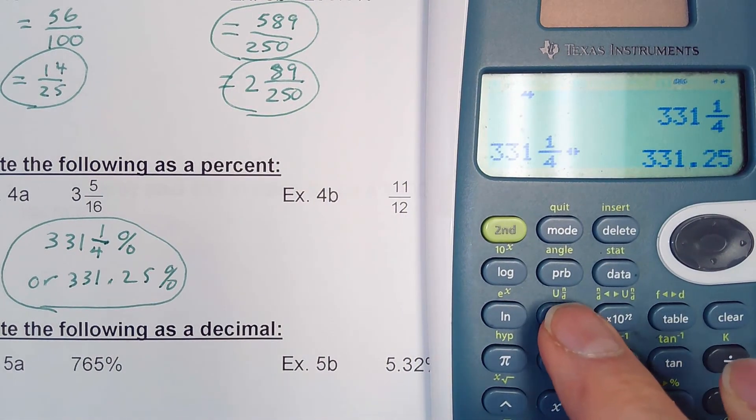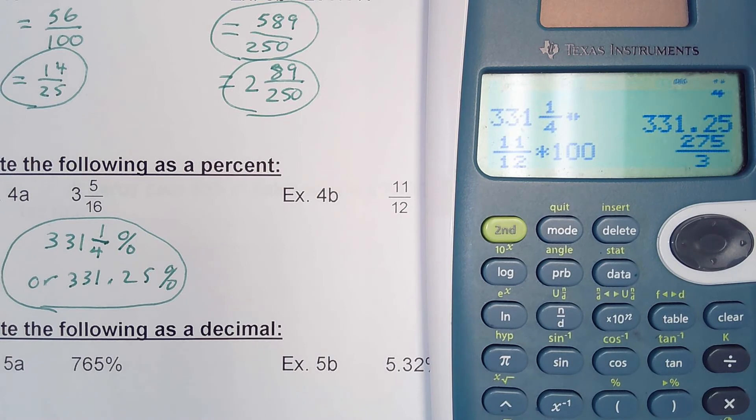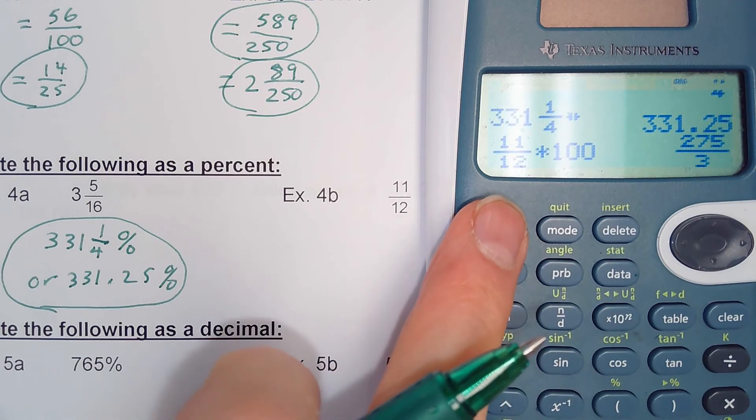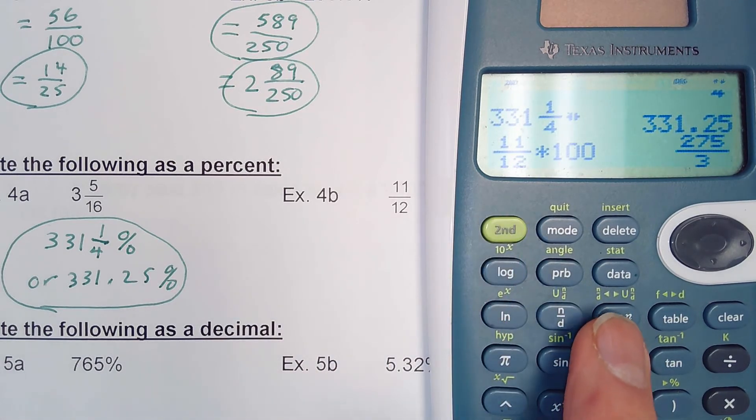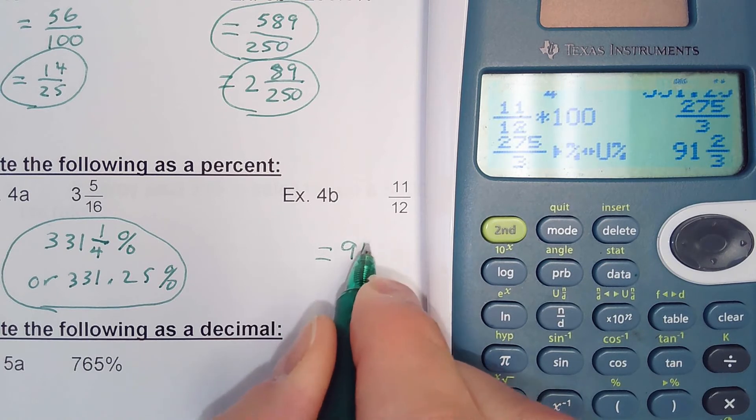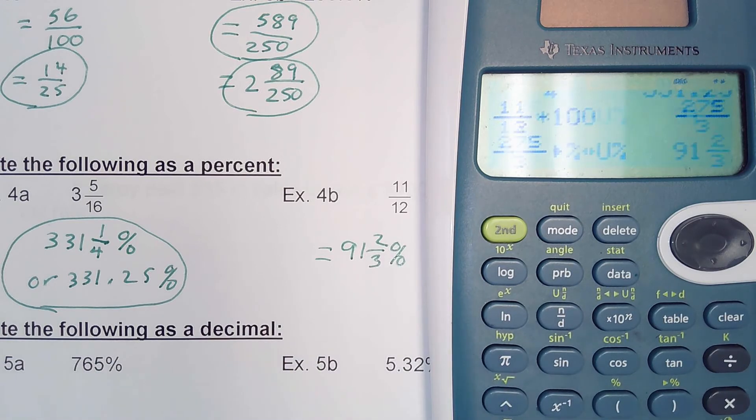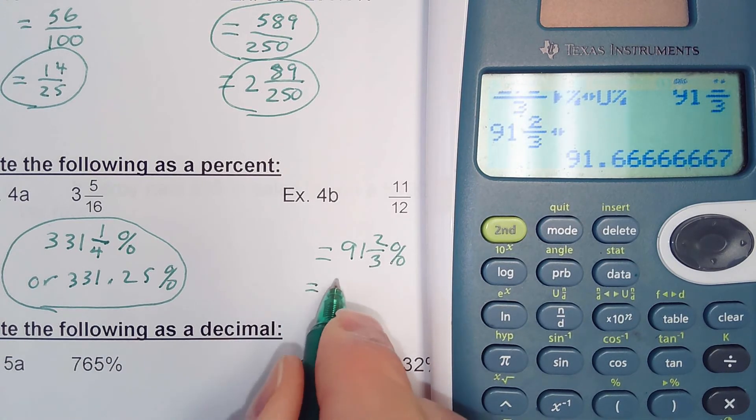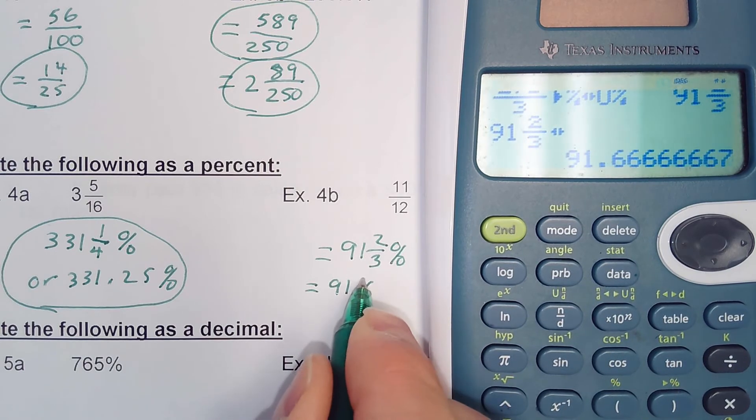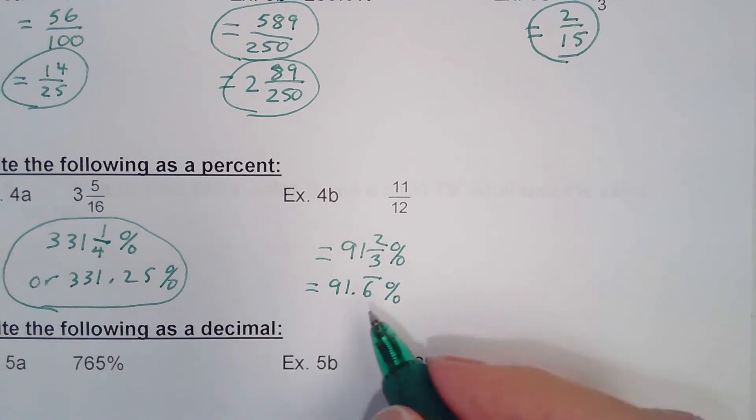For B, we've got 11 over 12. So I'm going to do my fraction 11 over 12, and then we're going to multiply that by 100. Again, normally they're not going to want an improper fraction for a percentage, so we're going to do second times 10 to the n key. So that'd be 91 and 2/3 percent. Hit the double arrow key and it's 91.6 repeating. And that last place, the calculator has rounded off. There's a 6 after that keeps on going, so it's rounded that off to 7, but we're going to leave it as 91.6 repeating.